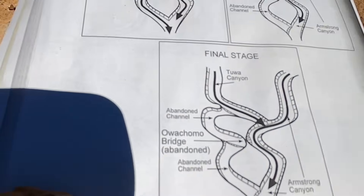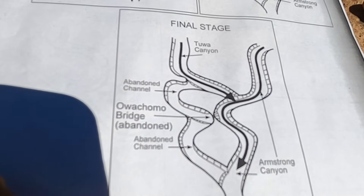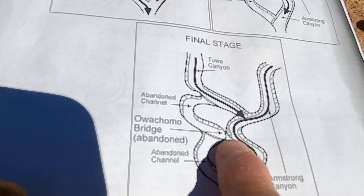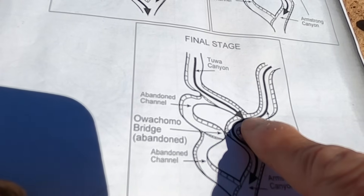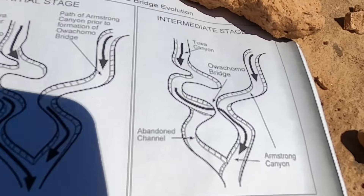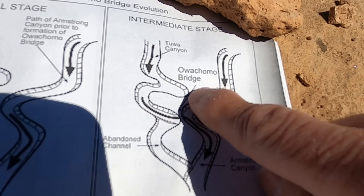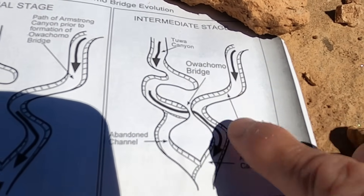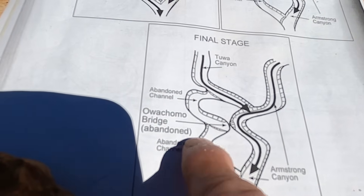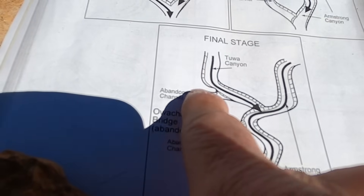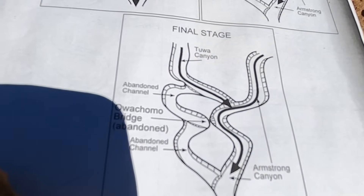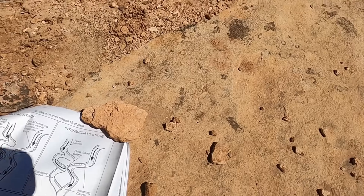The last part of this development: here's Owachomo Bridge, but the waters actually cut a second channel across this little neck. So originally that neck was up here, but erosion cut through it. What we have now are two abandoned channels — this abandoned channel here, and then the channel that used to have water flowing through it where the bridge is, now abandoned as well.